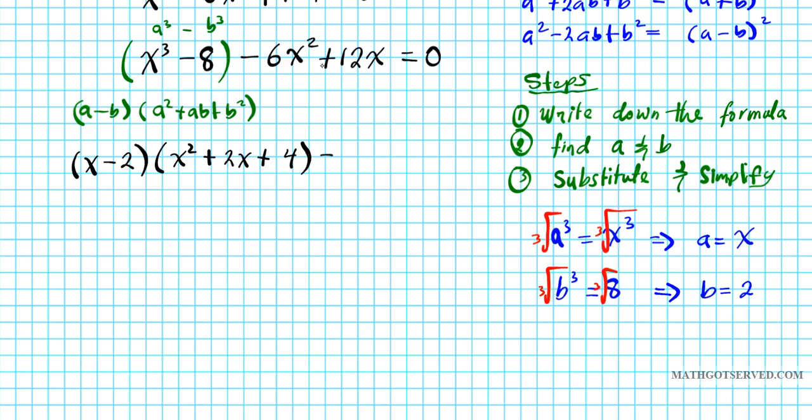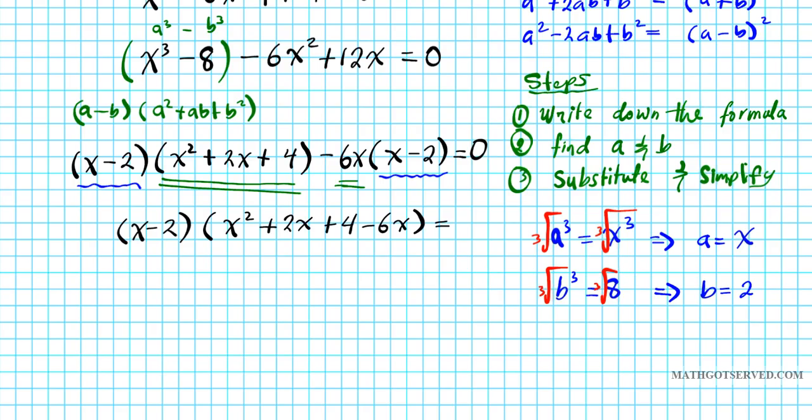Now let's shift our attention to these two terms on the right. What is the GCF of -6x² and 12x? The GCF is -6x so you factor that out. You're going to be left with x - 2, equals 0. Now what do you notice about these two, the two sides of this expression? You notice that you have a common factor namely x - 2. So what do we do with x - 2 since they're common? We factor it out. So we have (x - 2) and then we're left with this quantity right here, x² + 2x + 4, and -6x. So group those two together in their own parenthesis. So we have (x - 2)(x² + 2x + 4 - 6x) = 0.